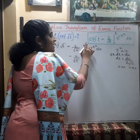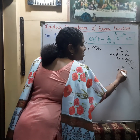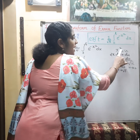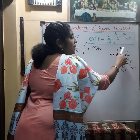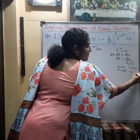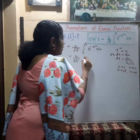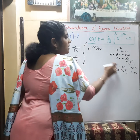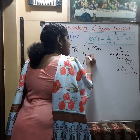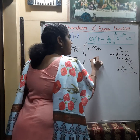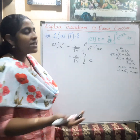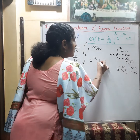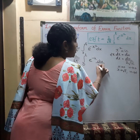The upper limit is root t. When x tends to root t, x squared equals t, so u tends to t. Therefore, the lower limit 0 stays 0, and the upper limit root t becomes t. And e raised to minus x squared becomes e raised to minus u, and dx becomes du divided by 2 root u.